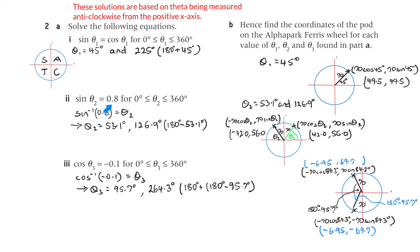Number 2: sine theta equals 0.8 for theta greater than or equal to 0 and less than or equal to 360 degrees. Sine to the minus 1 of 0.8 gives theta equals 53.1 degrees. We're measuring anti-clockwise from the x-axis. The only other place where sine is positive is the second quadrant, so it's also going to be 180 minus theta, which is 126.9 degrees.